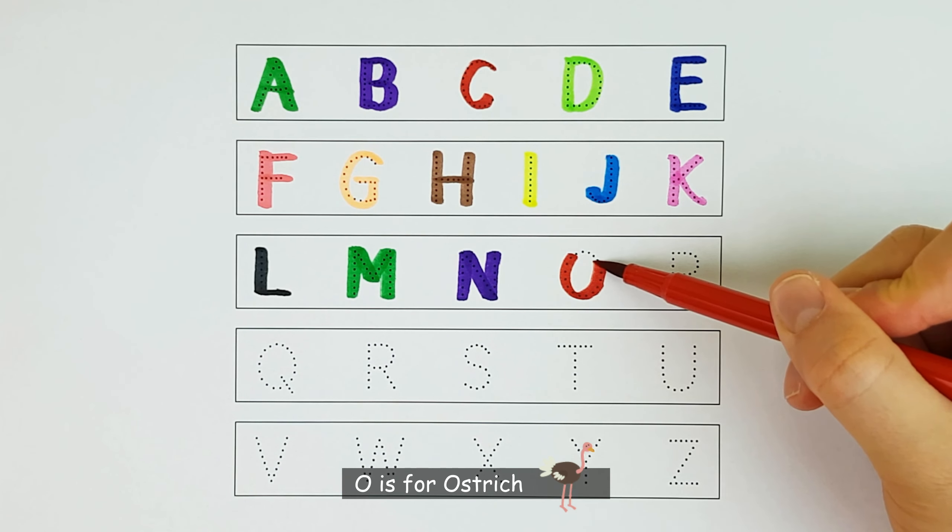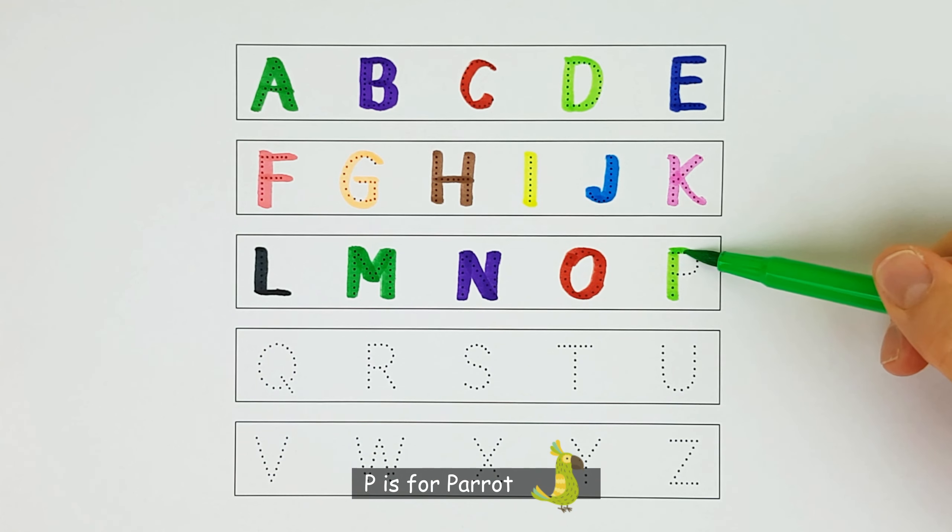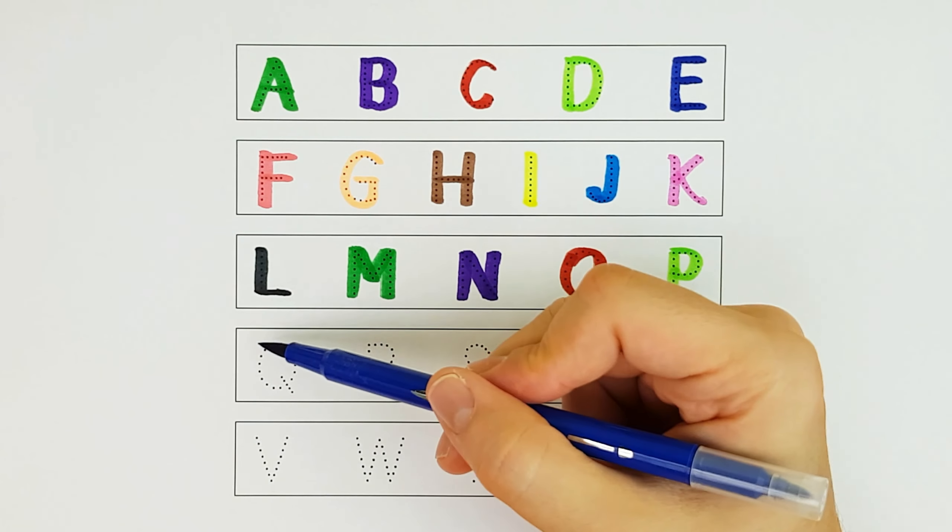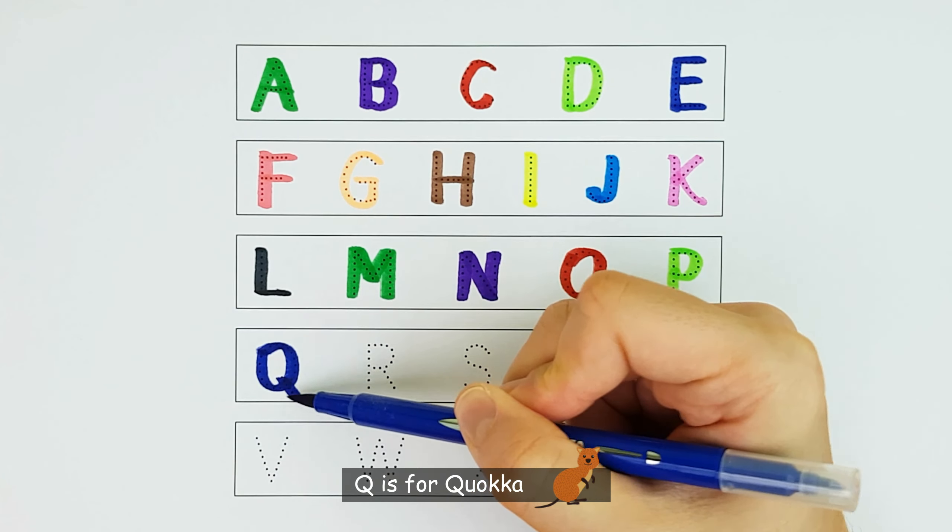O. O is for Ostrich. O. P. P is for Parrot. P. Q. Q is for Quokka. Q.